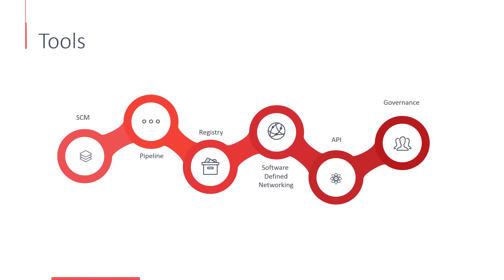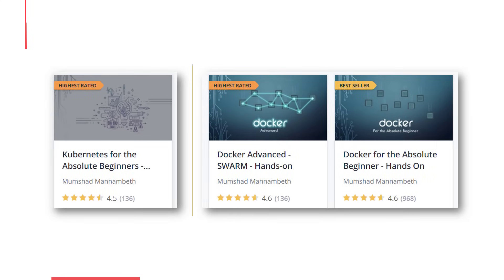We will look at each of these in depth later during this course. For now, let us proceed with understanding some of the prerequisites, such as Docker and Kubernetes, in much more depth. In case you are already familiar with these technologies, feel free to skip those lectures and go straight ahead into the OpenShift Architectural Overview section. If you are new to these technologies, even though we cover a basic introduction in this course, I would highly recommend attending the Docker for the Absolute Beginners and Kubernetes for the Absolute Beginners courses, which will help you understand and practice these technologies even more.